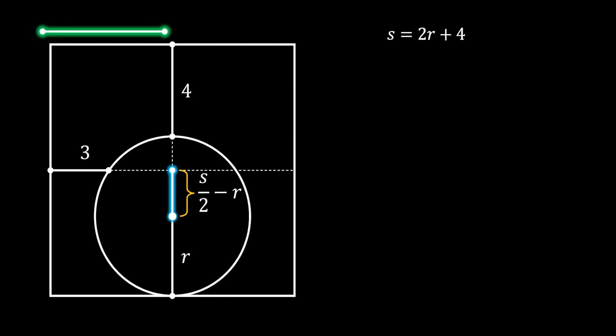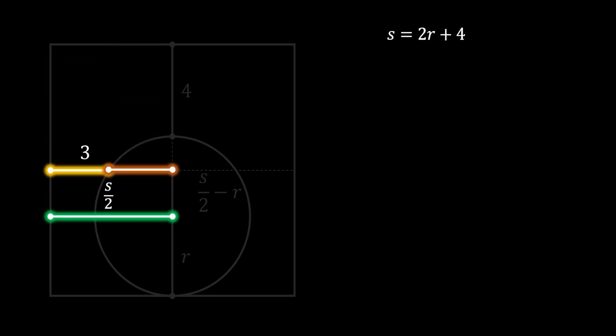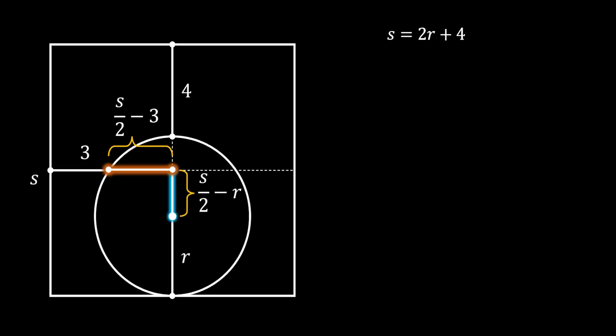Now we will do the same thing for the horizontal line. We will first label the upper half of our square as S over 2 again. Then we will notice this horizontal segment with the length of 3. Then we will extend this segment with another line up until the center of our square. Now if we look at this closely, we can see that this new line must have the length of S over 2 minus 3.